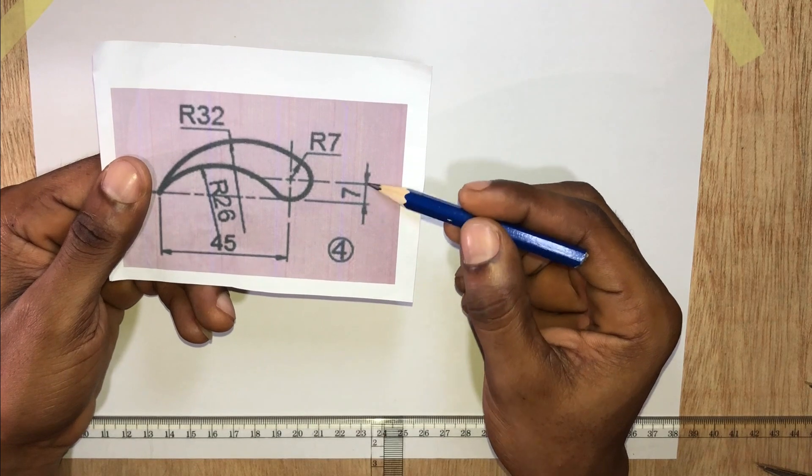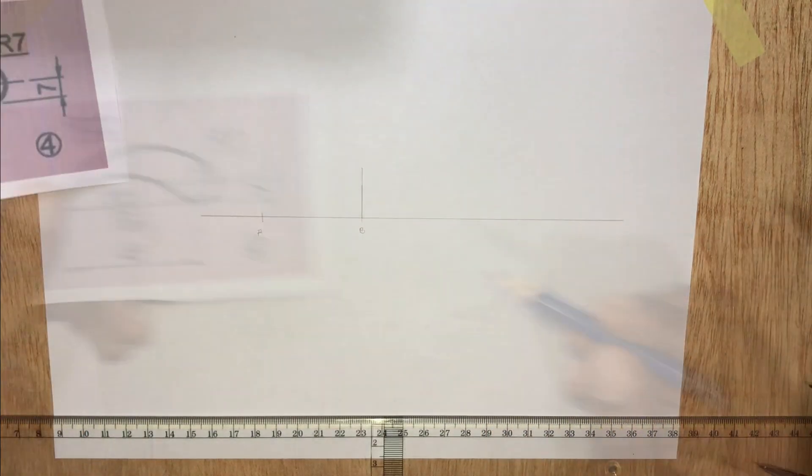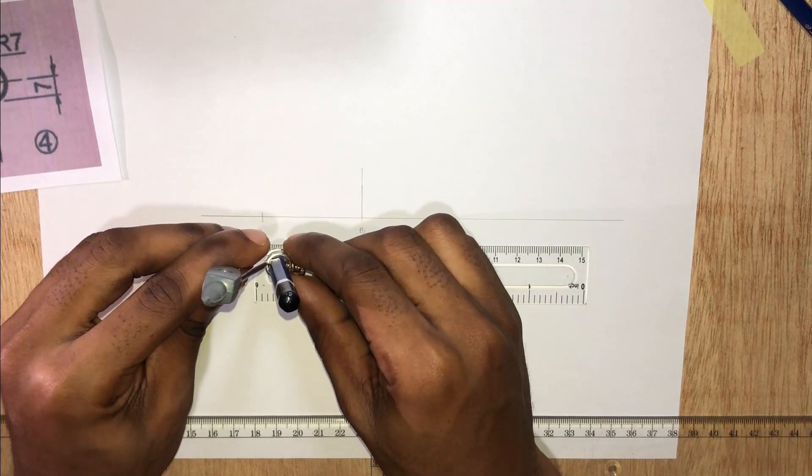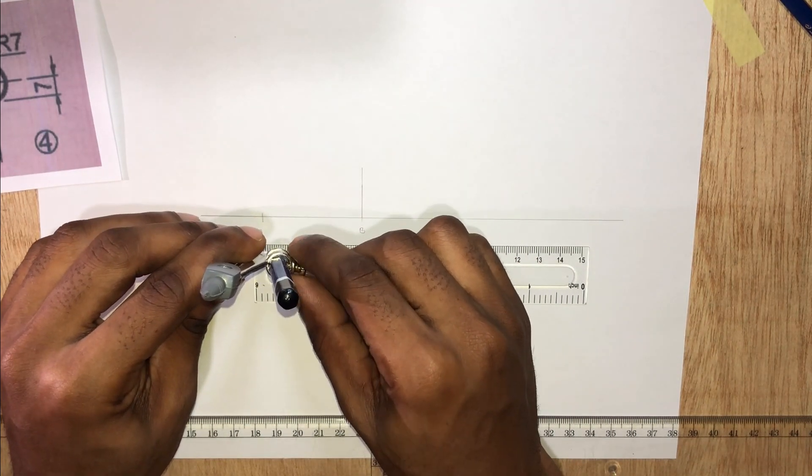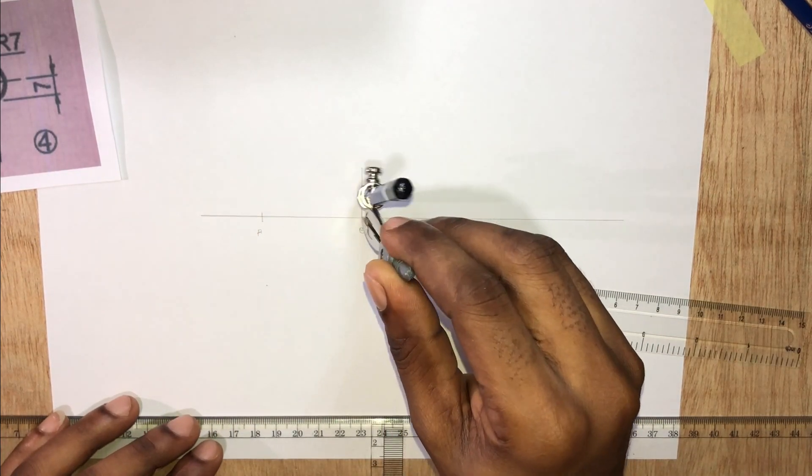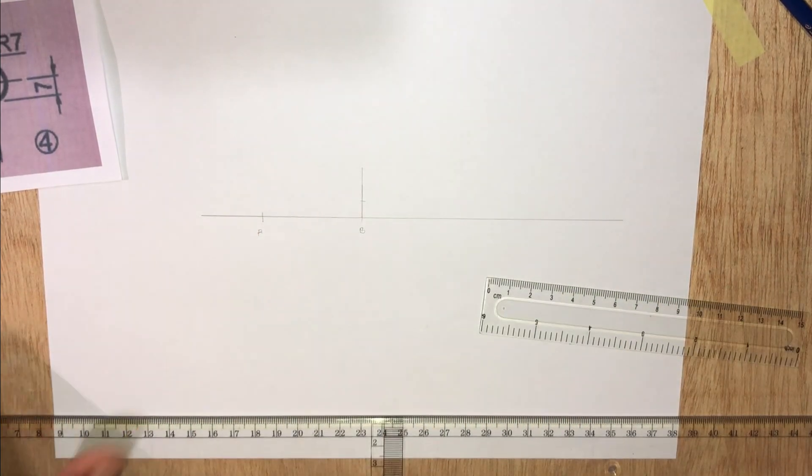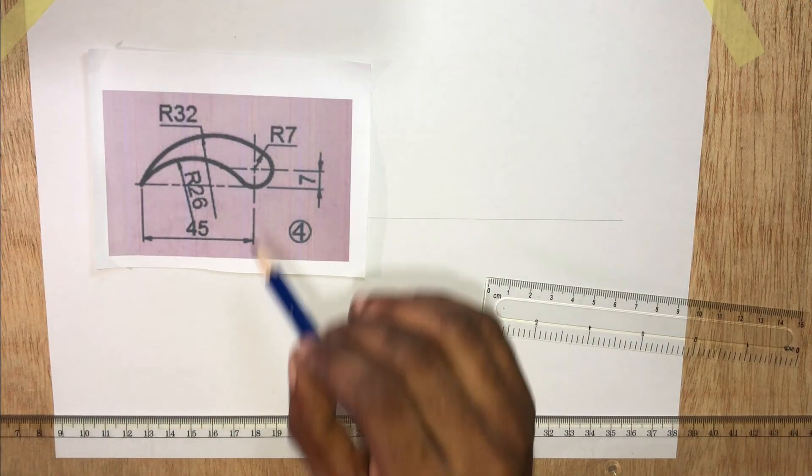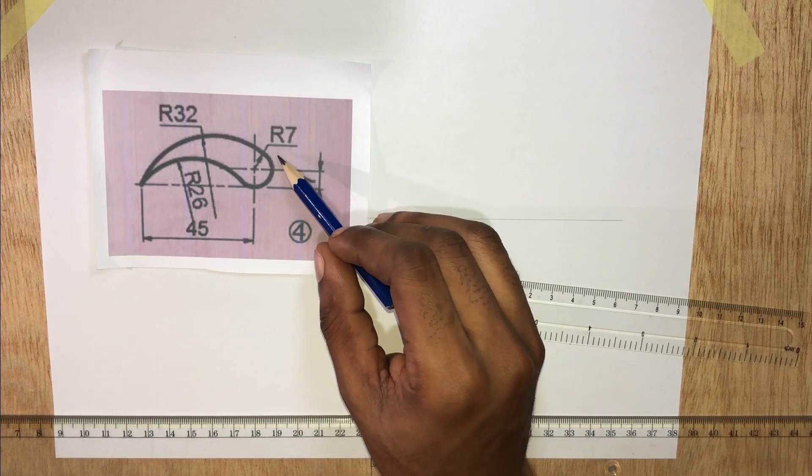This distance is 7 millimeters. Now this circle has a radius of 7 millimeters.